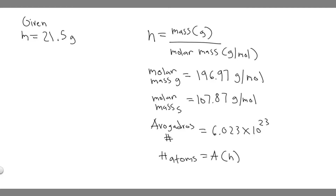In this problem, we're told: how does the number of atoms in a 21.5 gram gold ring compare to the number in a silver ring of the same mass? What we're going to be doing is basically finding the number of atoms in the gold ring and the silver ring, and we're going to be dividing — that's going to compare them.